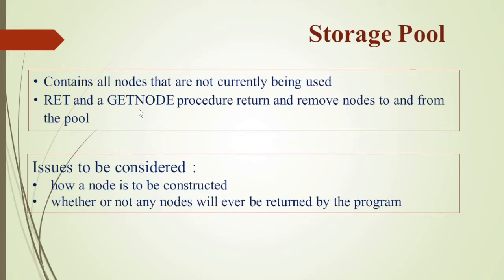We have two procedures: return and get node. We use these procedures to get data from the storage pool or to get a node, and once we are done we use them to return the node. So return and get node procedures add and remove nodes to and from the pool — get node and return.